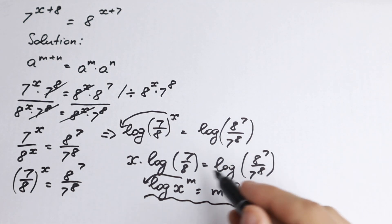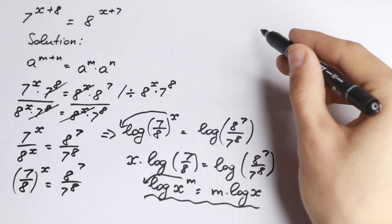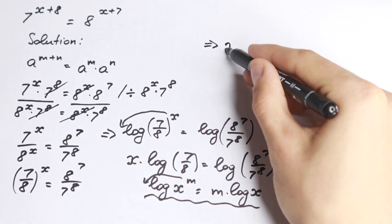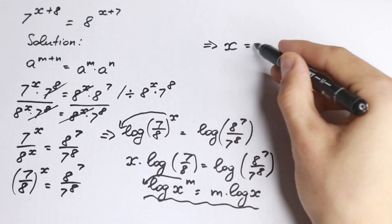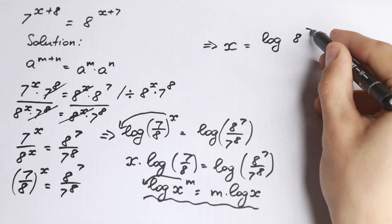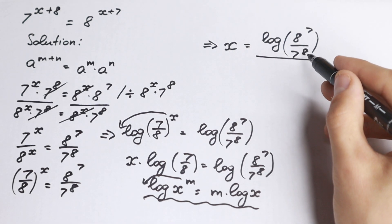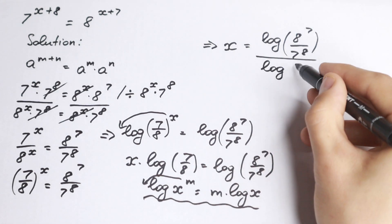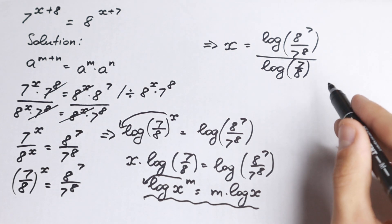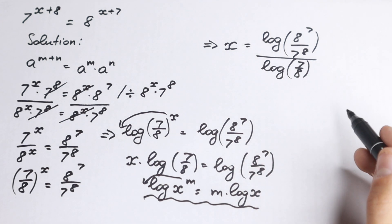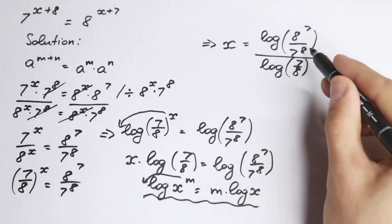Now we have x on the left multiplied by log(7/8), which is a constant, and a constant on the right. So it looks like we can solve for x. Dividing both sides by log(7/8), we get x equals log(8^7 / 7^8) over log(7/8). Both numerator and denominator are constants, so this gives us x.